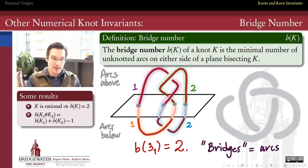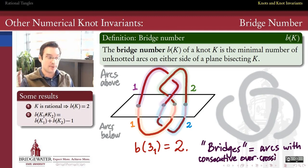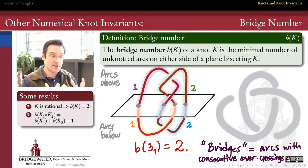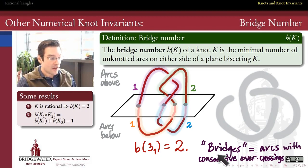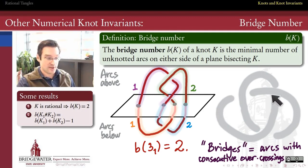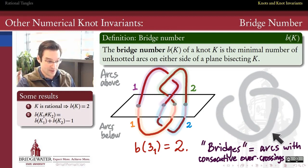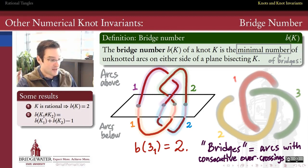Another way to think about bridge number — useful when working with a complex knot diagram rather than visualizing it in three dimensions — is where the name 'bridge' comes from. We can think of a bridge in a knot diagram as an arc that only crosses over one or more strands. This strand right here is an example of a bridge in this diagram because it only crosses over strands — namely this one right here along its route.